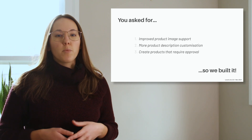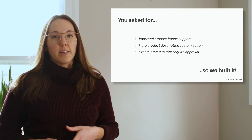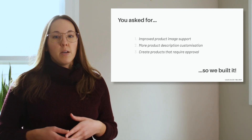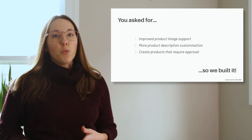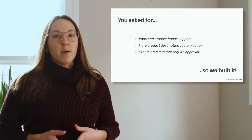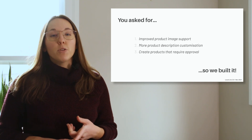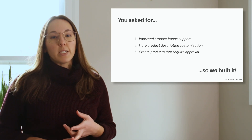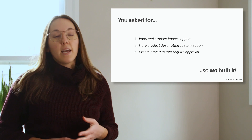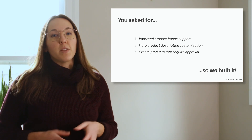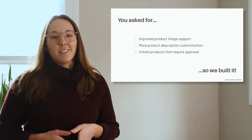We've also added more product description customization. Now with LocalLine 2.0, you'll be able to use emojis, bold, italic, or underlined text, bulleted lists, and hyperlinks within your descriptions.